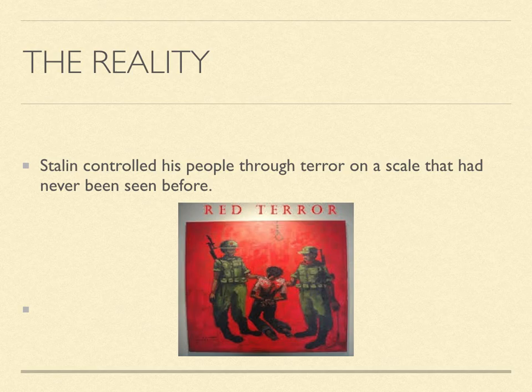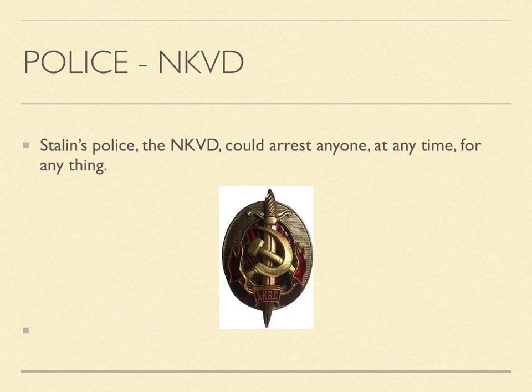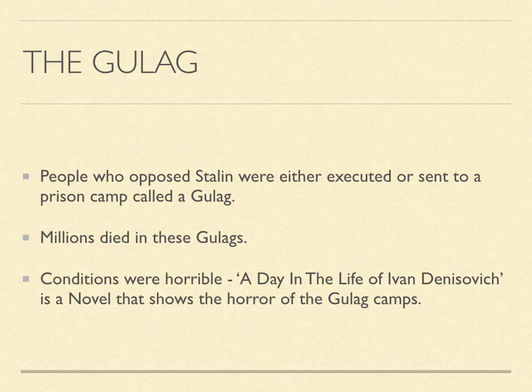The reality of life within Soviet Russia was something far darker and more disturbing. Stalin controlled his people through terror on a scale that had never been seen before in history. He used his secret police known as the NKVD, who could arrest anyone at any time for anything. This is the badge of the NKVD. Russia had always had secret police going back as far as Catherine the Great, but the NKVD were a particularly brutal secret police force. Another tactic used was the Gulag — these were prison camps up in Siberia. People who opposed Stalin were either executed or sent to these Gulags, and millions and millions died in them.